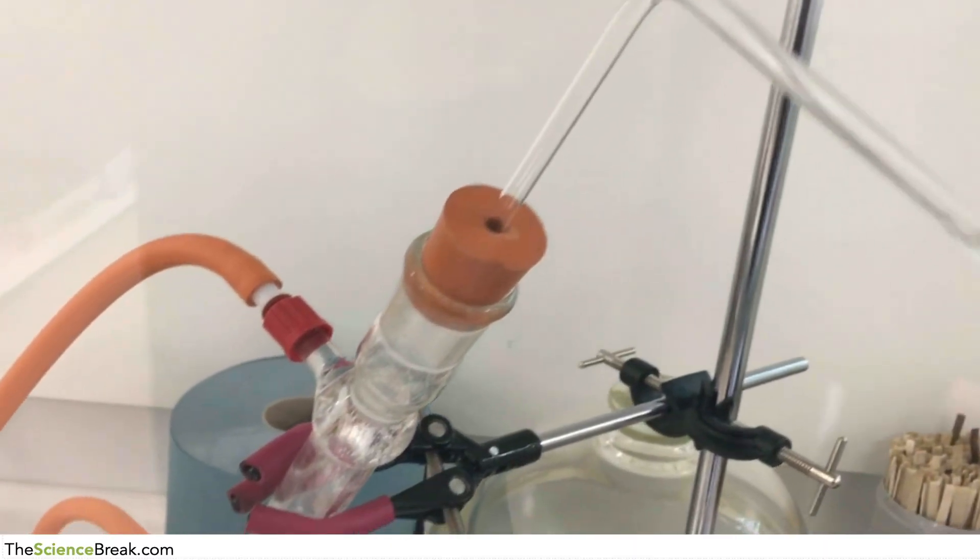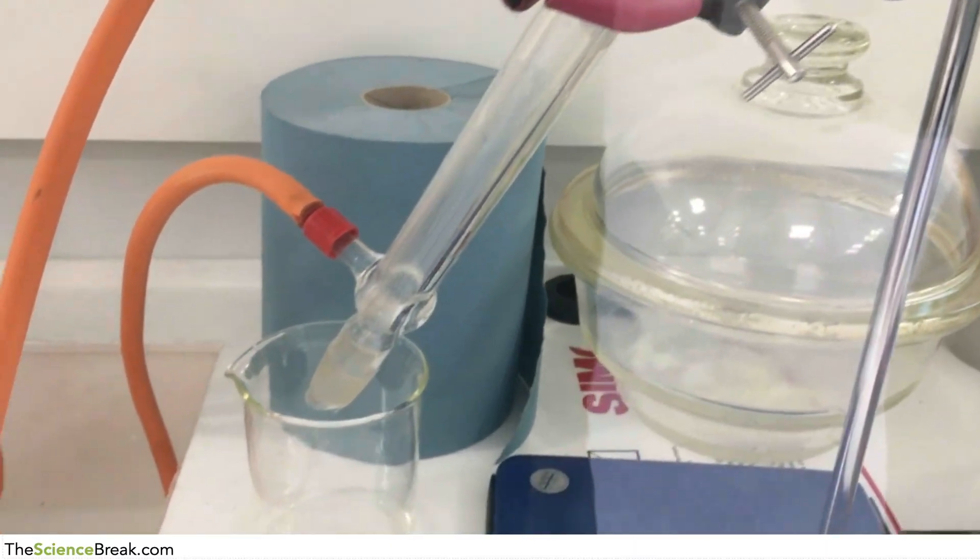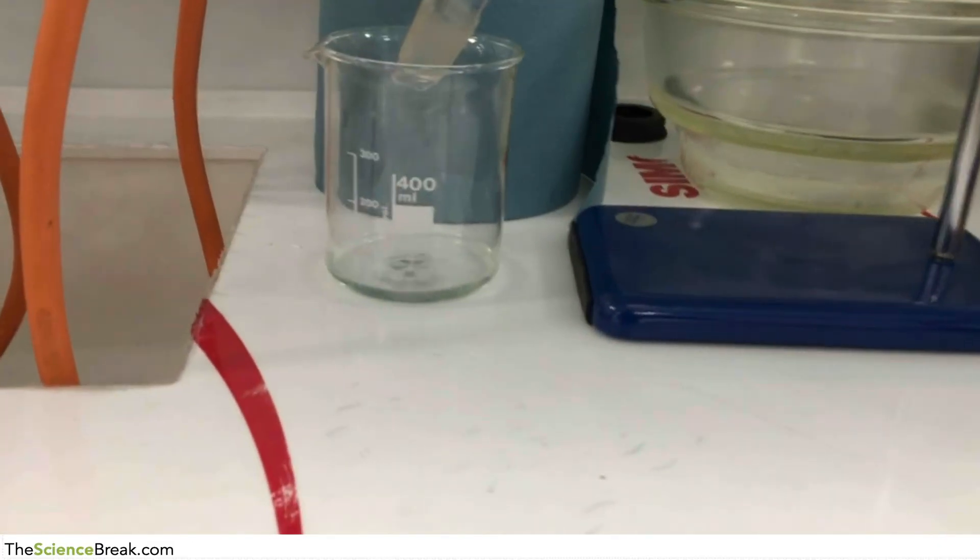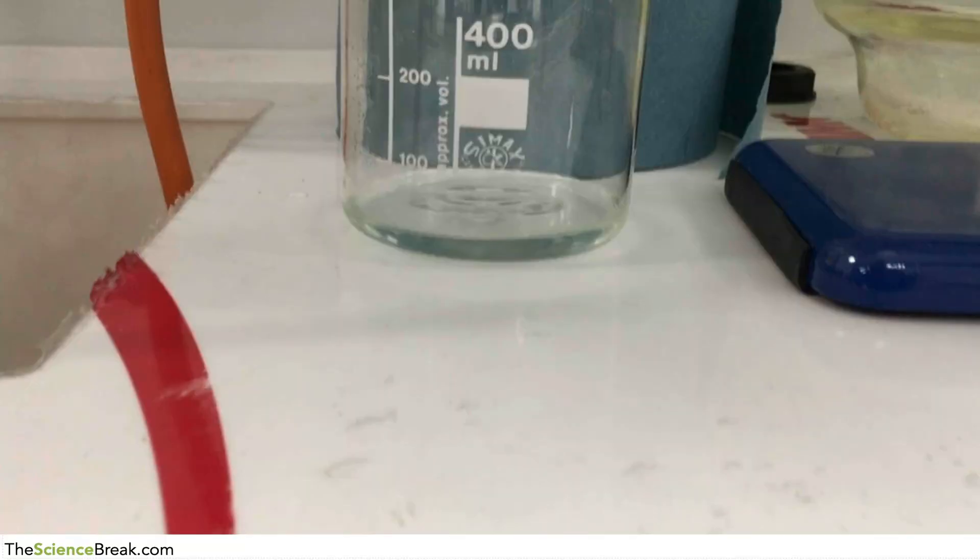The vapor is coming out, passing through the delivery tube, through the condenser there where it's being cooled, and then condensing back into a liquid. You can see there the liquid ethanol separated from that very dark green mixture that we had at the beginning.